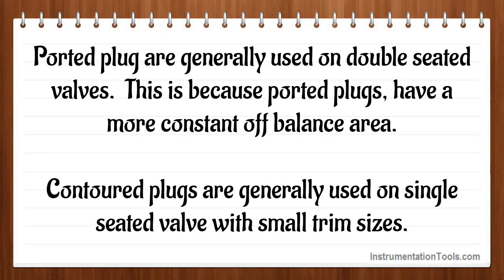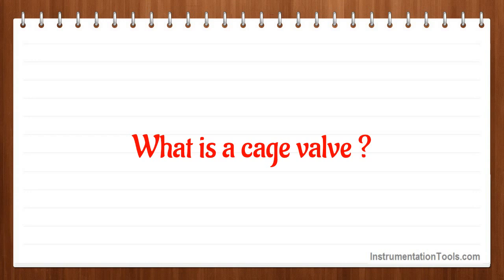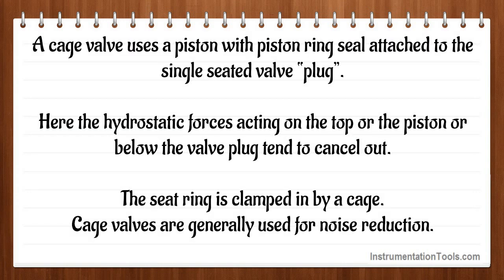What is a cage valve? A cage valve uses a piston with piston ring seal attached to the single seated valve plug. The hydrostatic forces acting on the top of the piston or below the valve plug tend to cancel out. The seat ring is clamped in by a cage. Cage valves are generally used for noise reduction.